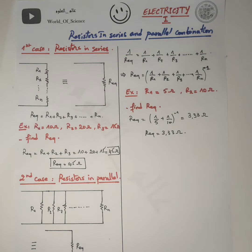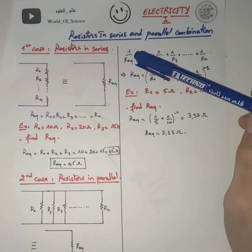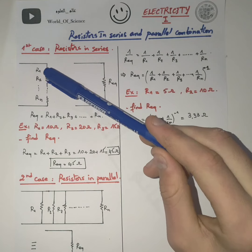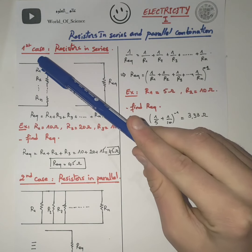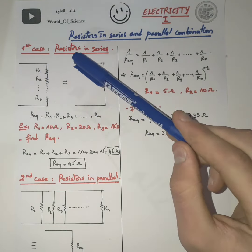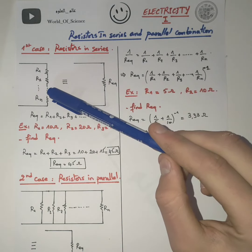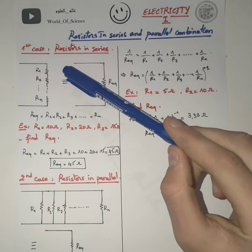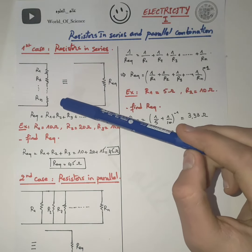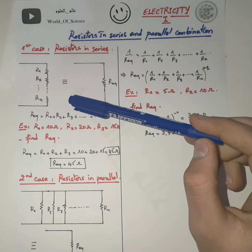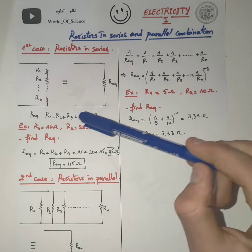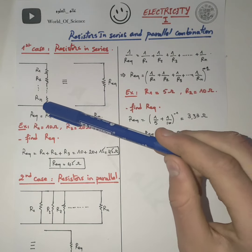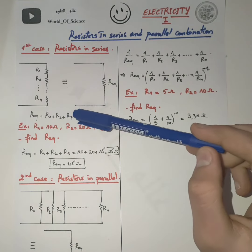In this video, I choose to start with calculating the equivalent resistance of a circuit. Let's start with the first case: when we have resistors in series. As we see here, all the resistors from R1 to Rn are in series with each other. In a series circuit, the equivalent resistance is simply the summation of all the resistors. So R equivalent equals R1 plus R2 plus R3 till Rn.